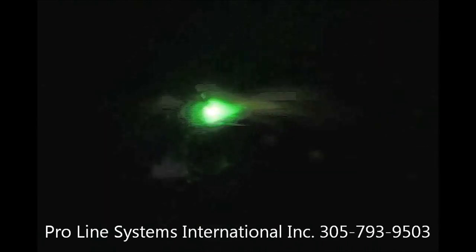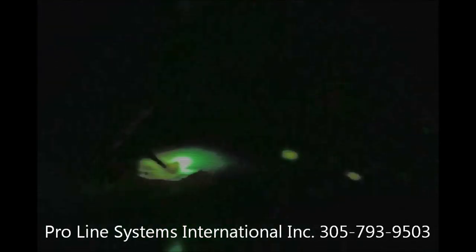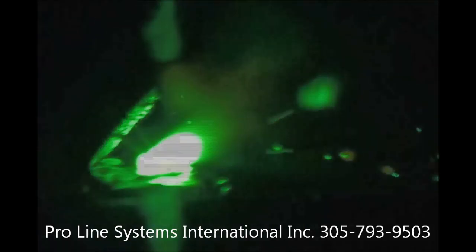MIG braze wire melts at approximately 1000 degrees Celsius or 1900 degrees Fahrenheit and flows along the weld joint without actually melting or fusing the base material.